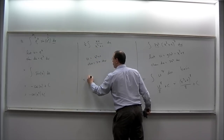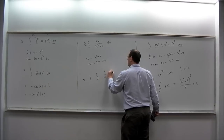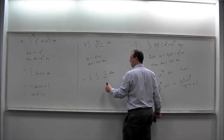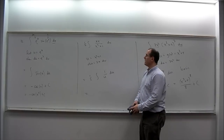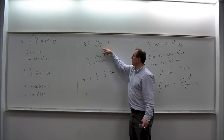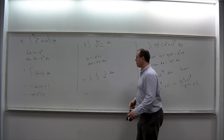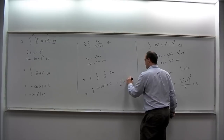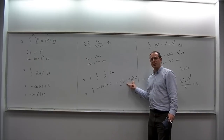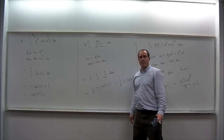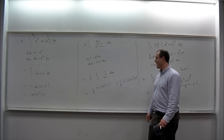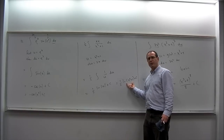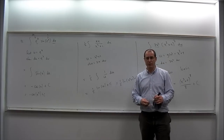This transforms into 1/2 times the integral of 1 over U DU — 2x dx becomes DU, and x squared plus 1 becomes U. This is a basic integral. The idea of U-substitution is to turn an integral that's not basic into a basic integral. So we get 1/2 log of the absolute value of U plus C, giving 1/2 log of (x squared plus 1) plus C. The absolute values were dropped because x squared plus 1 is always at least 1, so it's positive. In general it's a good idea to write them, but if you're sure the expression is positive, you don't need them. So that's a look at U-substitution. Thank you for watching.